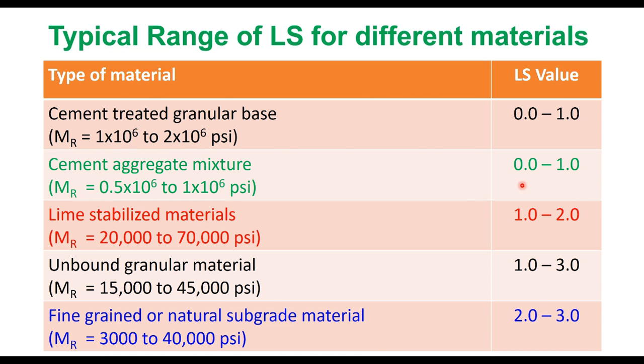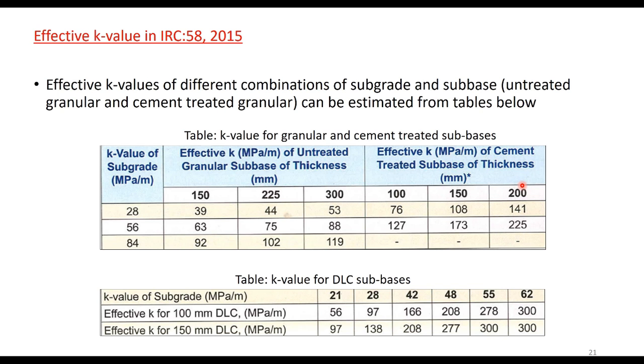IRC 58 does not consider all these parameters while calculating k value. It gives a simple table to calculate effective k value for different combinations of subgrade and subbase material: untreated granular or cement treated granular base. It can be estimated from this table. It says if k value of subgrade and effective k value of untreated granular subbase of thickness 150, 225, and 300.